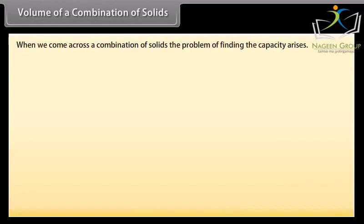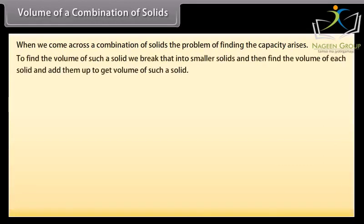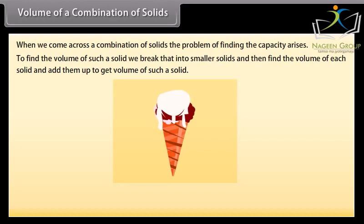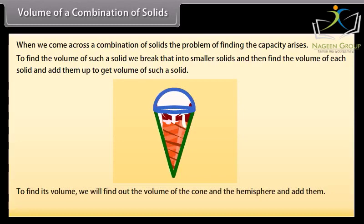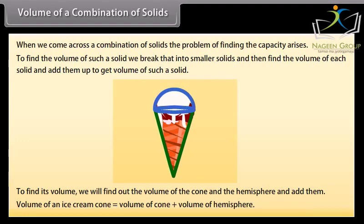Volume of a combination of solids: When we come across a combination of solids, the problem of finding the capacity arises. To find the volume of such a solid, we break it into smaller solids and then find the volume of each solid and add them up. For example, the volume of an ice cream cone — a combination of a cone and a hemisphere — equals the volume of the cone plus the volume of the hemisphere. Let's solve an example.